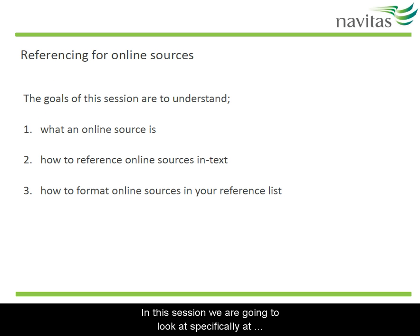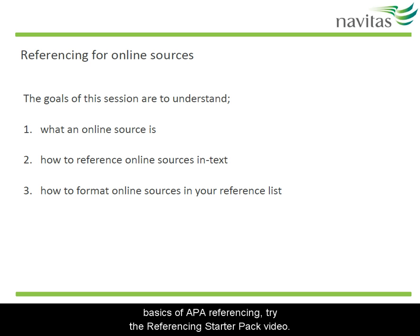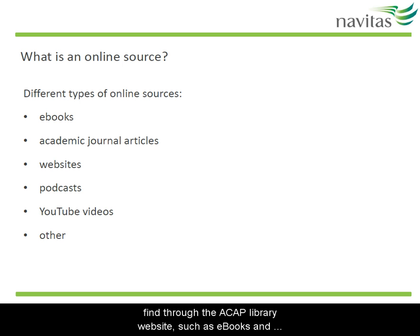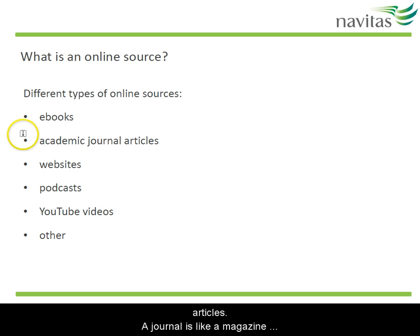In this session we're going to look specifically at online sources. If you're interested in the basics of APA referencing, try the Referencing Starter Pack video. It's not surprising that an online source is anything you find on the internet. This includes anything you find through the ACAP library website, such as e-books and academic journal articles. A quick word about journal articles.